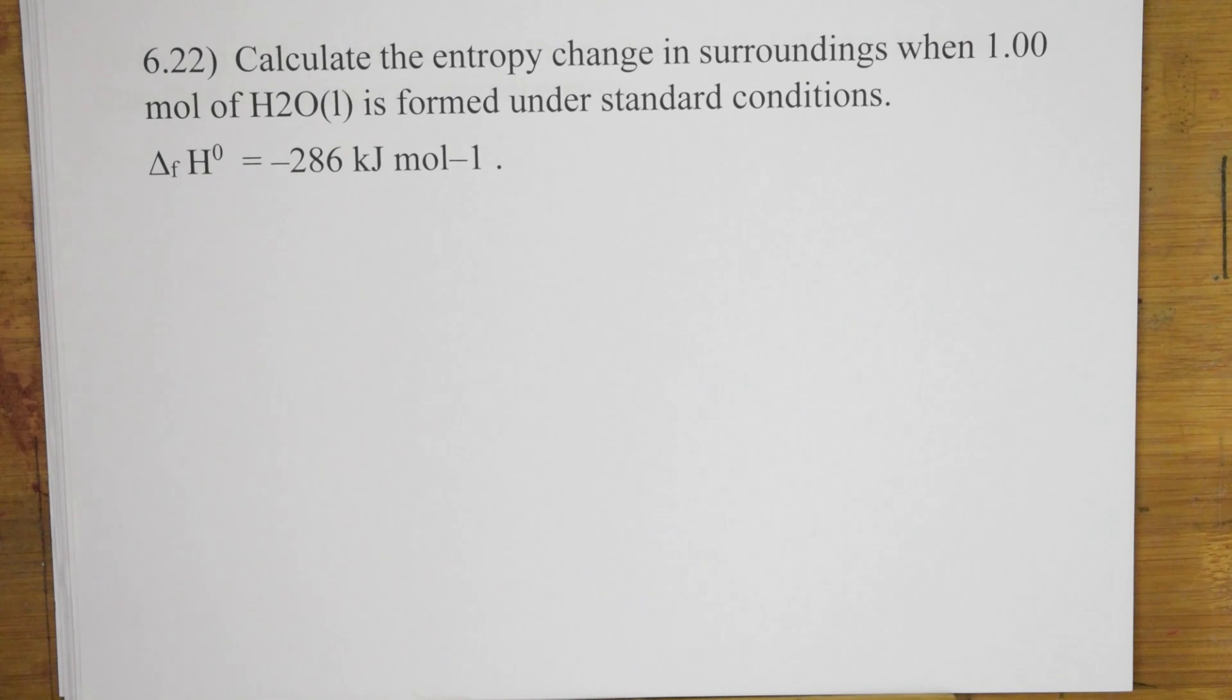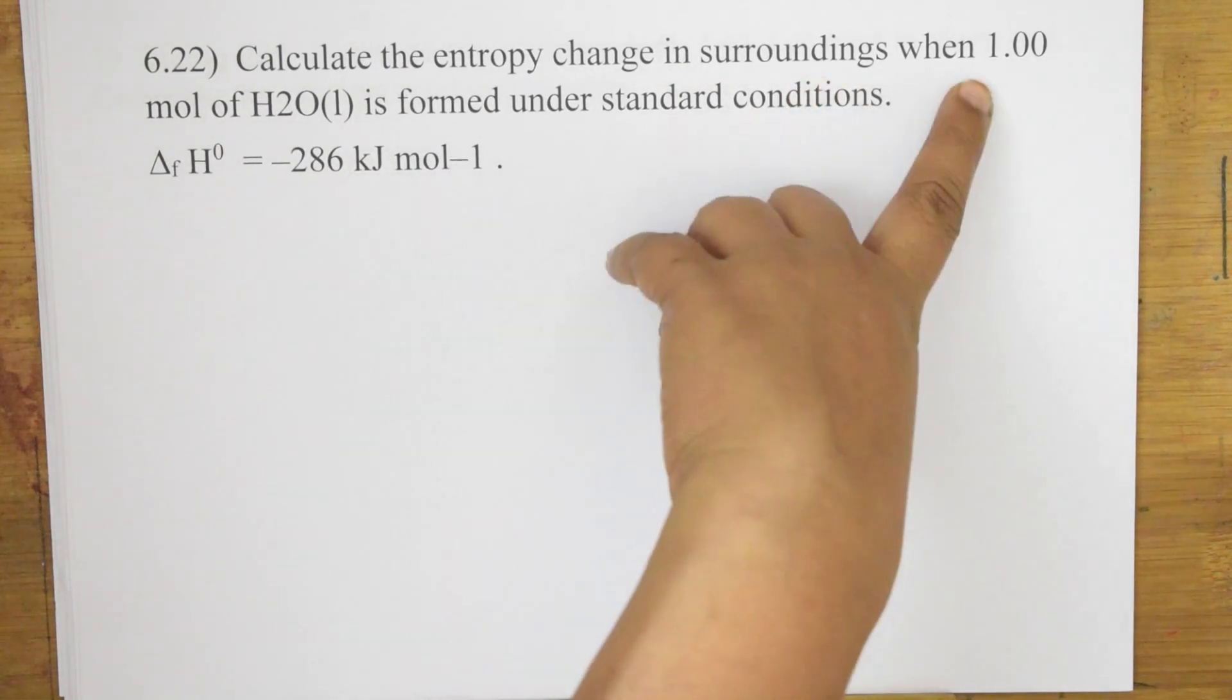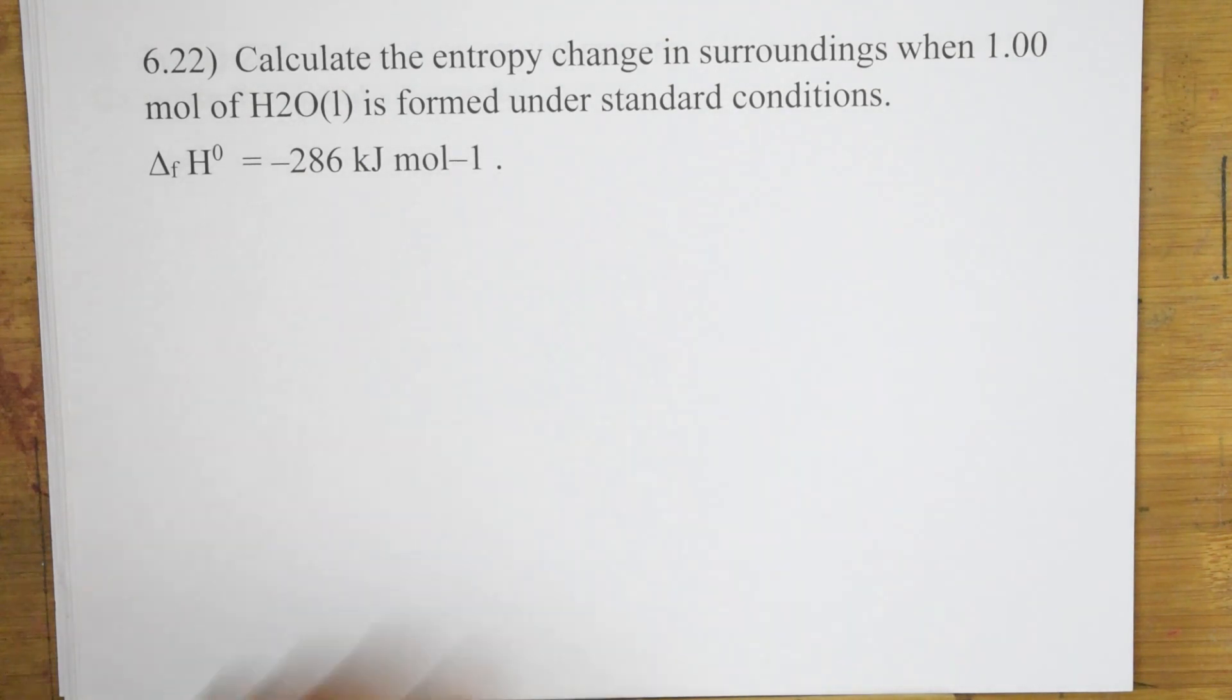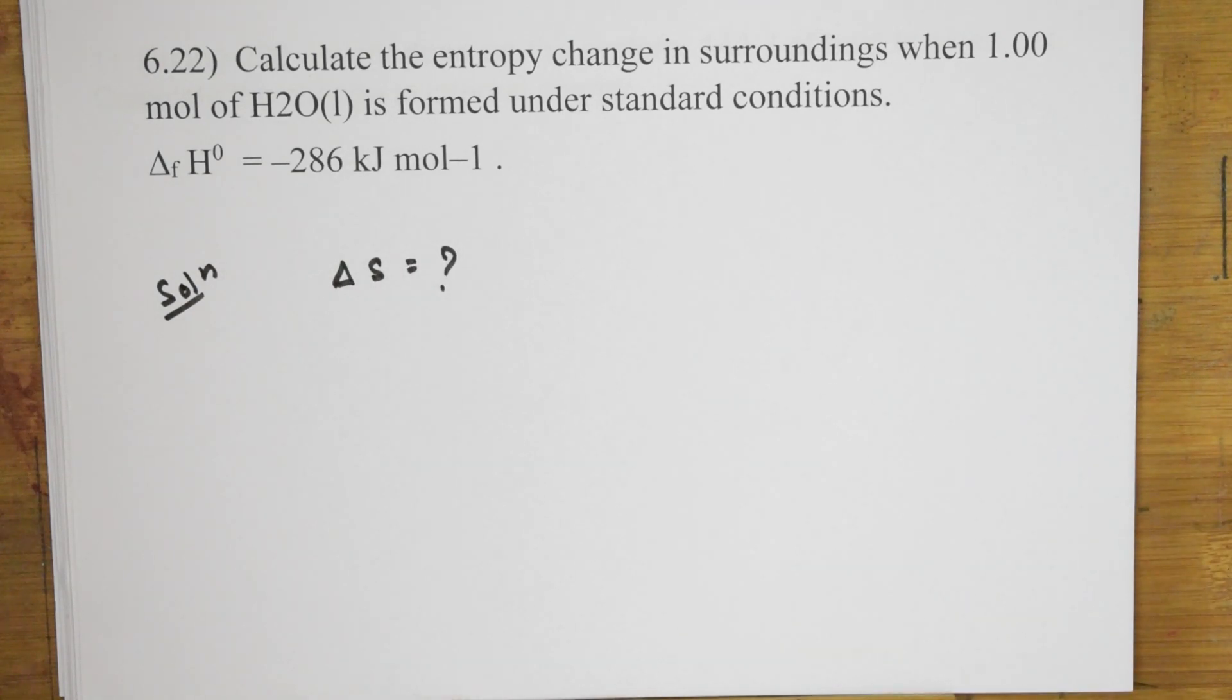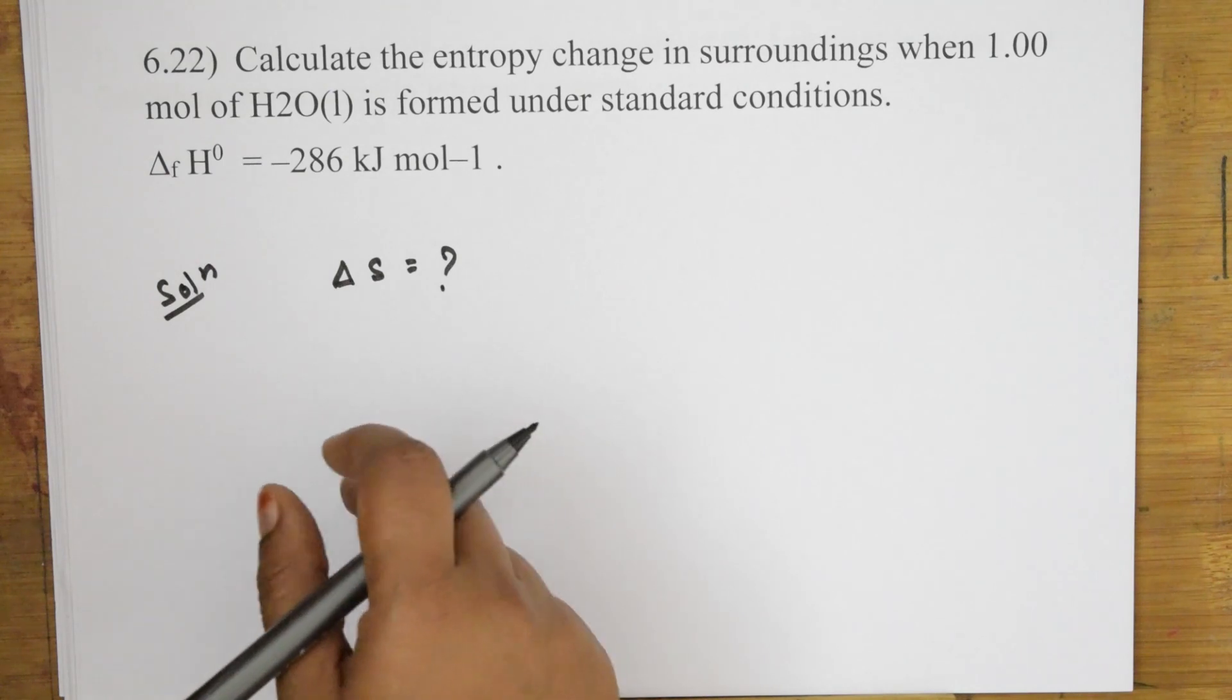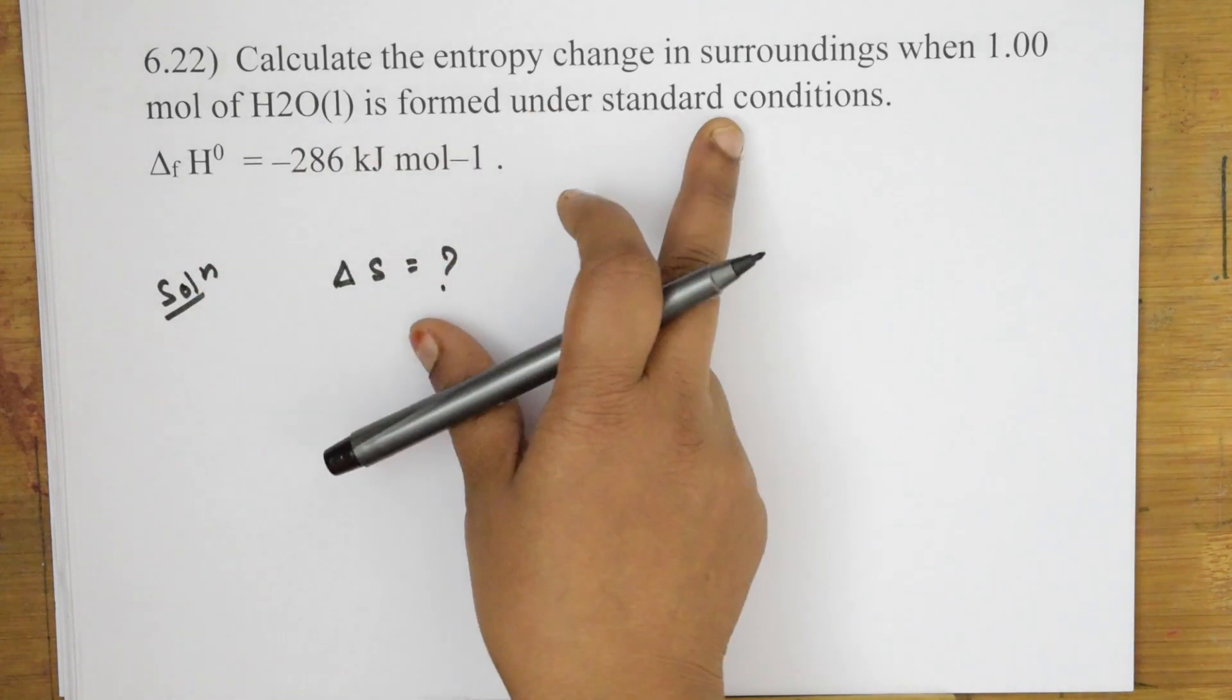Last. Next, come back and do 6.22 equation. What do you mean? Calculate the entropy change in the surroundings when one mole of water is formed under standard conditions. So, what should I calculate? I need to calculate entropy change. So, let's write the solution. What should I calculate? I need to calculate delta S is how much. So, one mole is given, delta H formation is given. Let's do it. So, when such question is given to you, first try to write the equation which is given to you. Means, here they have not given it, but let us write from the data which is given. They said calculate the entropy change in surroundings when one mole of water is formed under standard conditions.